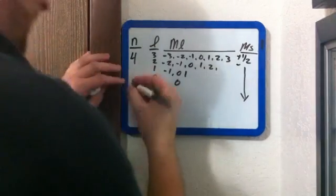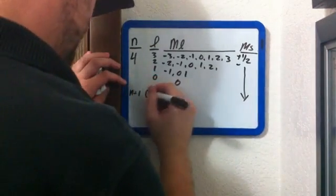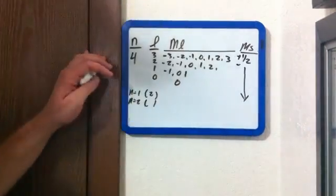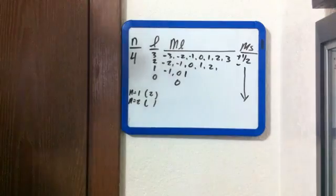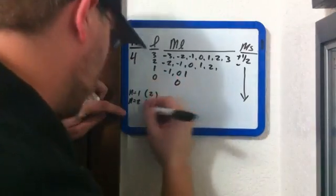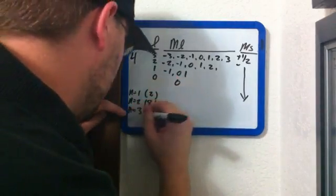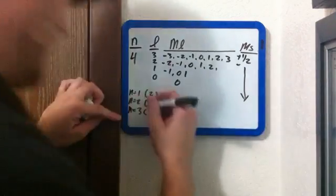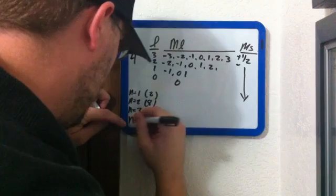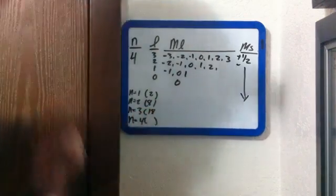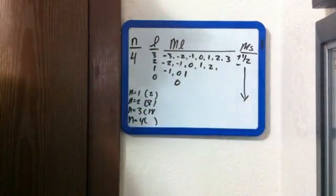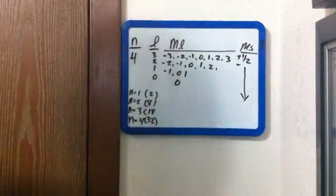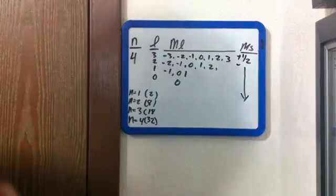So just to recap: n equals one gives me two electrons, n equals two gives me eight electrons, n equals three gives me 18, and n equals four gives me 32 electrons. Two, eight, 18, 32.